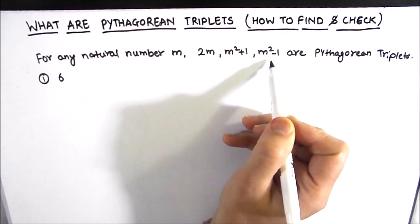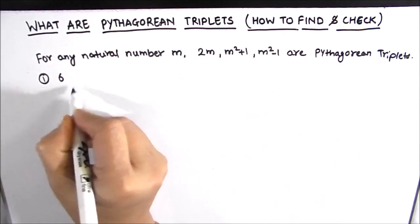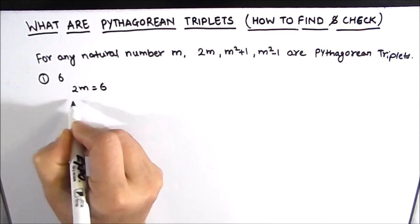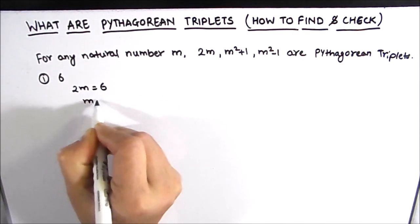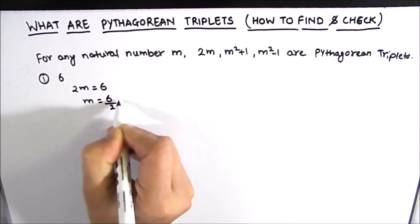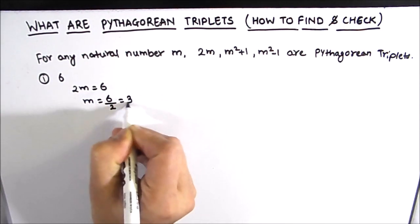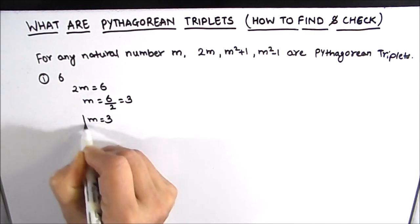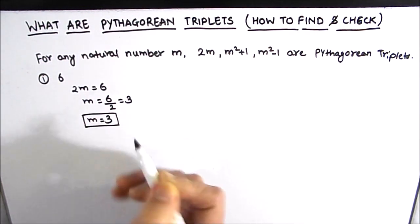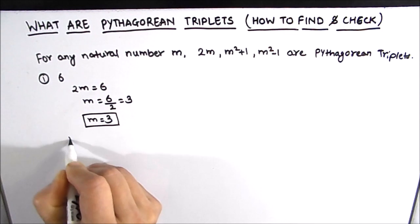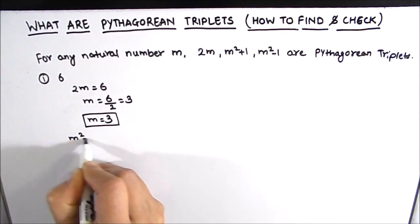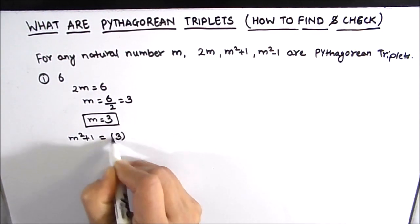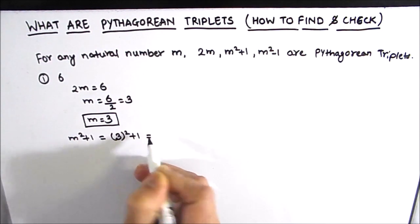To find the Pythagorean triplet for number 6, we have three expressions: 2m, m²+1, and m²−1. Let us suppose that 2m equals 6, so m will be equal to 6 divided by 2, which gives us m equals 3.